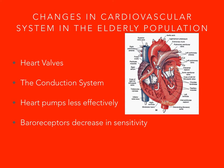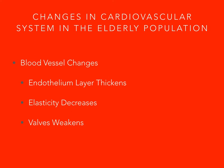Blood vessels and their structures also begin to change over time, causing many problems to occur. The endothelium layer begins to thicken, which changes the vessel's ability to constrict and dilate as needed. These changes can result in a constant constriction of the blood vessels, further leading to higher blood pressure. Within the inner layer of the vessel, the elasticity decreases, resulting in decreased blood circulation, which can lead to an inadequate supply to various organs. This also causes an increase in blood flow resistance, leading to higher blood pressure.